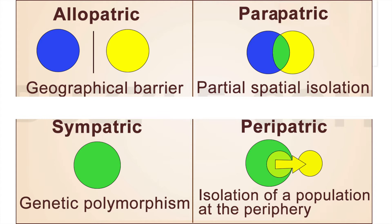There are different modes of speciation: allopatric, parapatric, sympatric, and peripatric. In allopatric speciation, there is a geographical barrier in the middle. These populations begin to diverge when there is a restriction in gene flow due to geographic isolation — they undergo genetic divergence. In sympatric speciation — 'sym' meaning same, 'patric' meaning homeland — this speciation occurs in a geographically overlapping population where organisms sometimes occupy different niches.